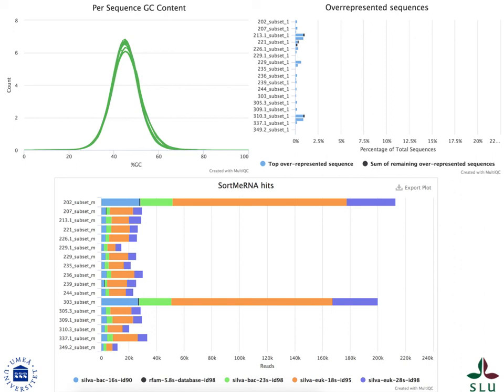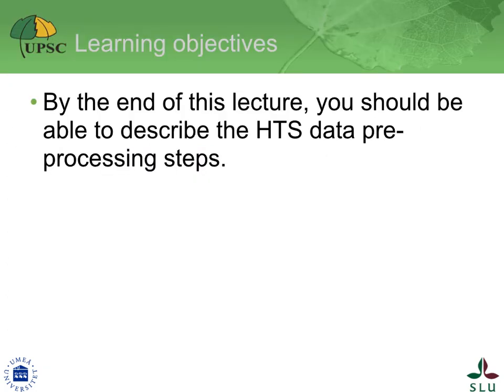In that example, it becomes obvious that two samples stick out as having a very high rRNA proportion of reads. We have now reached the end of the lecture. Thank you for your attention. You should now be able to describe the HTS data preprocessing steps.